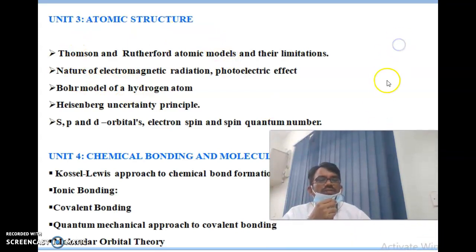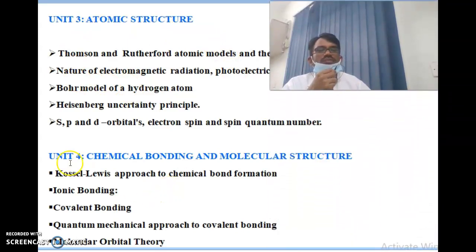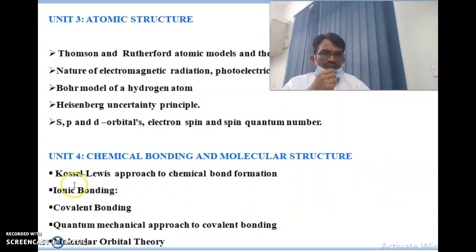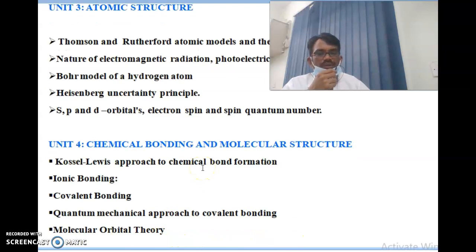Unit 4 is chemical bonding and molecular structure. Topics include the covalent approach to chemical bond formation, ionic bond, covalent bonding, quantum mechanical approach to covalent bonding, and molecular orbital theory.